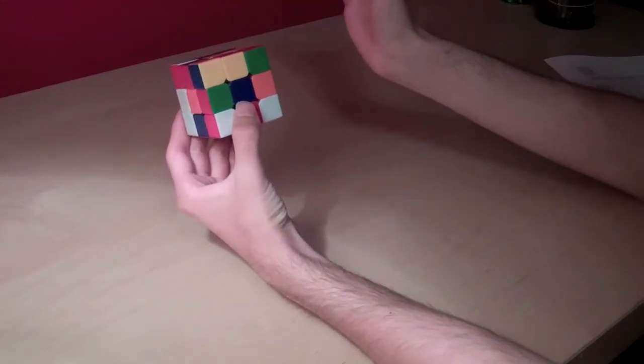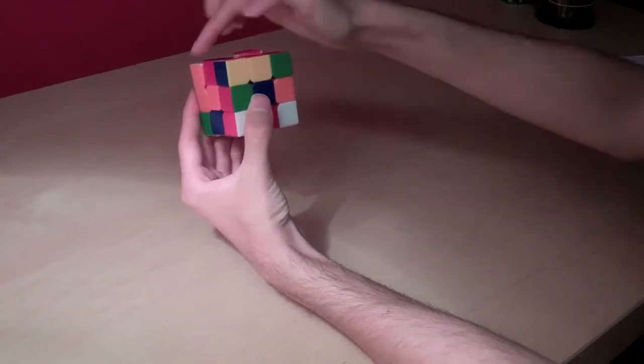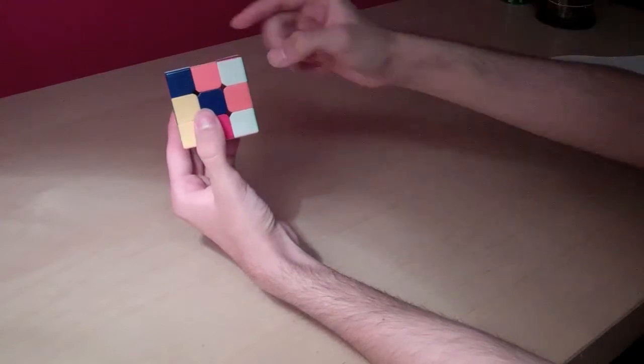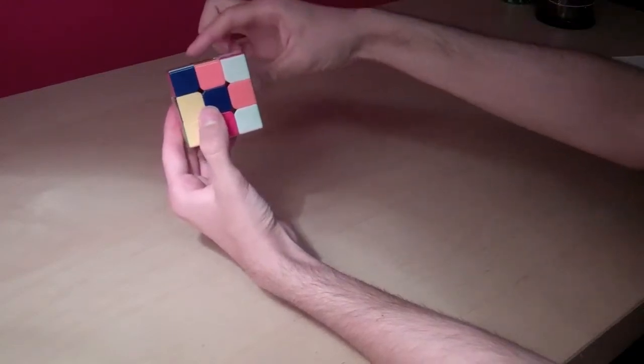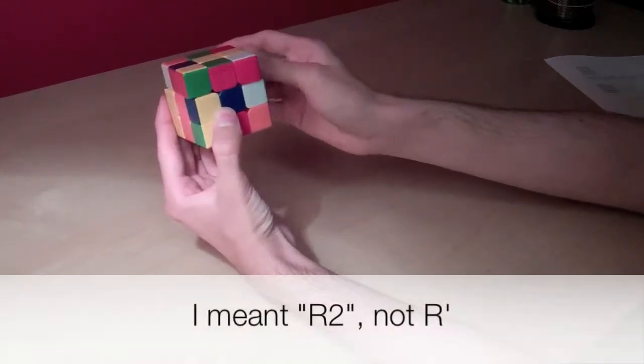What I said is pretty much what I'm going to do. I'm going to do a B prime, and I'll just do it now. Then I'm going to shoot that edge over to the right, so like that. And then I need to utilize these two to occupy these two positions. So I'm going to bring it up, doing an R prime and then a U prime.